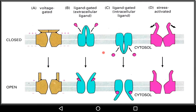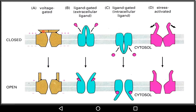Next, we will discuss carrier proteins and channel proteins and understand the difference between the two. The channel protein is mainly of two types: non-gated and gated. The channel protein has a hole — a direct channel. If it is non-gated, it is an open channel. If it is gated, it can be opened or closed.